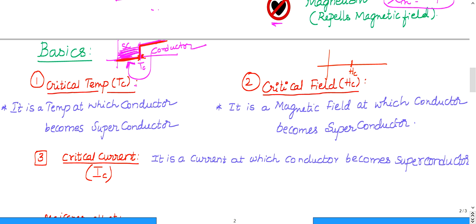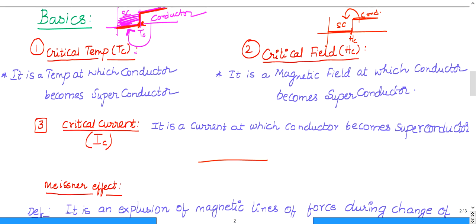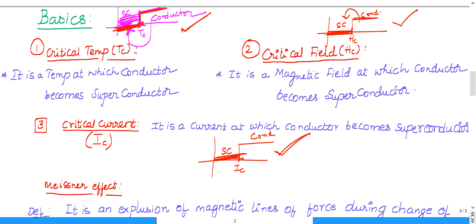Critical field (Hc) is the magnetic field at which the change of state takes place. Below critical field it will be a superconductor; above critical field it will be a conductor. Critical current (Ic) similarly is the current at which the conductor becomes a superconductor or vice versa. Remember: below the critical value is always the superconductor state; above the critical value is always the conductor state.